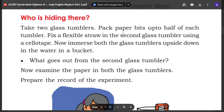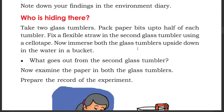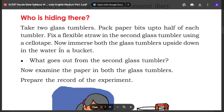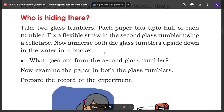Take two glass tumblers. Pack paper bits up to half of each tumbler. Fix a flexible straw into the second glass tumbler using cellotape. Now immerse both the glass tumblers upside down in the water in a bucket.